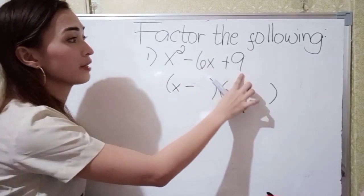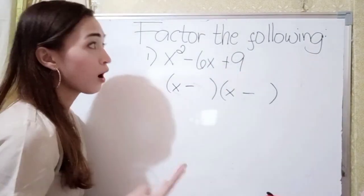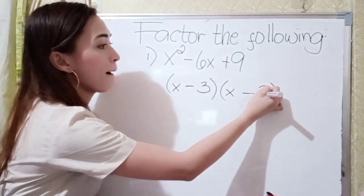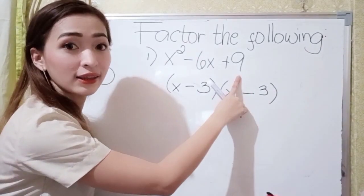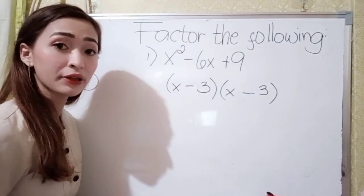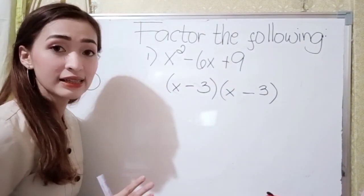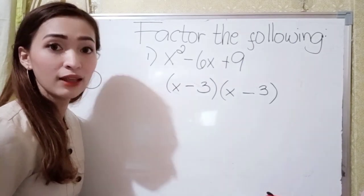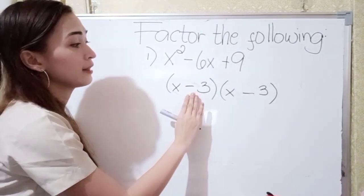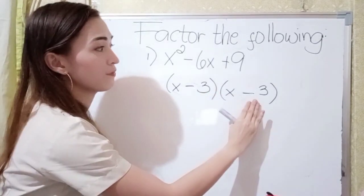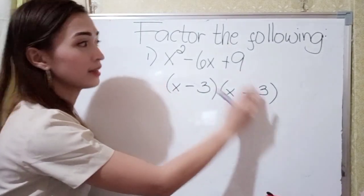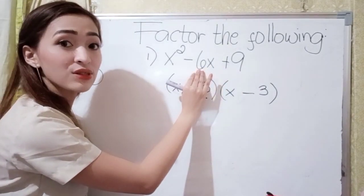Now, what are the factors of 9? Or what is the square root of 9? The square root of 9 is 3, because 3 times 3 is 9. Now let's check. Think of a number: if we multiply, the answer is positive 9, and if we add them, the answer is negative 6. So that is negative 3 times negative 3 — that is positive 9. And then negative 3 plus negative 3 — that is negative 6.